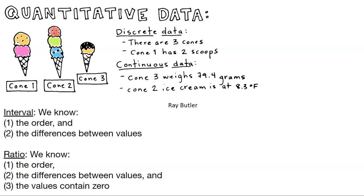Quantitative data include numbers, remember. So any of those numbers, you can actually do something. You can add them, you can multiply them, you can divide them. If that makes sense, then you have quantitative data. We can think about there being discrete data. So there are three different kinds of cones here. Cone 1 has two scoops, we can think about that as discrete. Continuous data might be things more like weights and temperatures. Cone 3 weighs 79 grams, Cone 2 is at 8.3 degrees Fahrenheit.